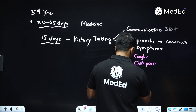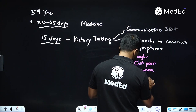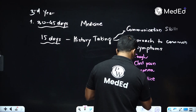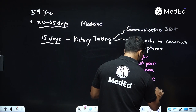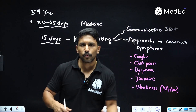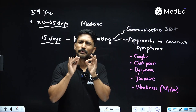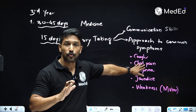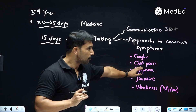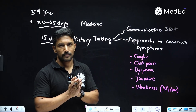The important symptoms I want you to concentrate on — since you can't cover all symptoms in 15 days — are: cough, chest pain, dyspnea or shortness of breath, jaundice, and motor weakness. You need to know how to approach a patient presenting with weakness of a body part. If someone comes to you with cough, you should be able to get a good history and reach a provisional diagnosis. Same with chest pain — you should reach a provisional diagnosis from the complaint itself.